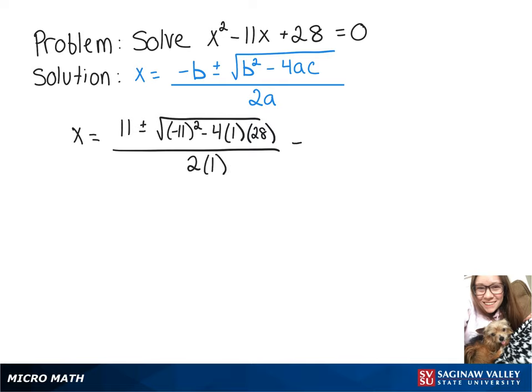That will then simplify to 11 plus or minus the square root of 9 over 2.